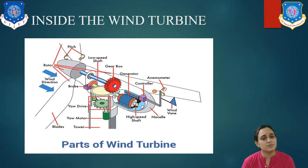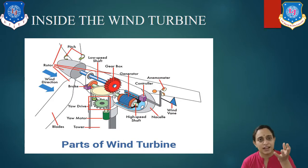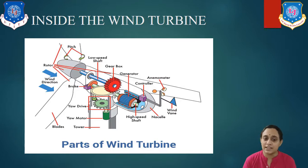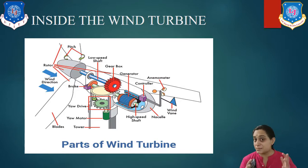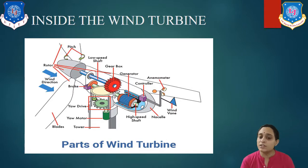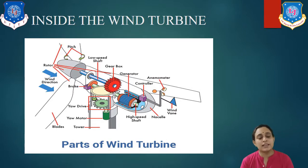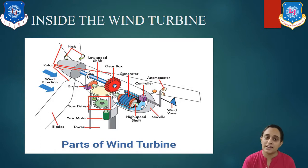Tower is made from tubular steel on which we have to put the whole system. The nacelle contains all the machinery — the back part of the rotor — and all the machinery and computers that make it possible to generate electricity. These are all the parts.